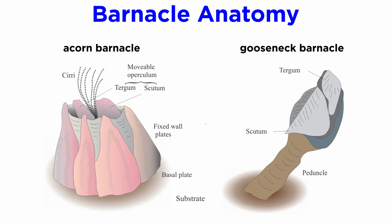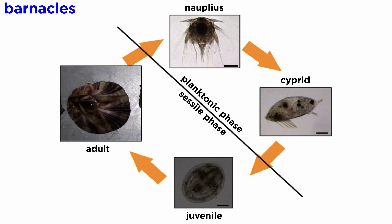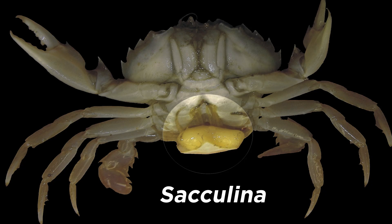Barnacles have a reduced head, no abdomen, and long thoracic legs with many jointed cirri and hair-like setae. They extend their cirri through an opening between their calcareous plates to filter feed. In addition to their unique physiology, they are noted for their extreme metamorphosis. Some, like the invading barnacle Sacculina, undergo an even more extreme metamorphosis — invading the living tissues of a crab and growing through a root-like system throughout the crab's body, eventually growing externally and manipulating the crab to treat the parasitic protrusion like its own eggs.